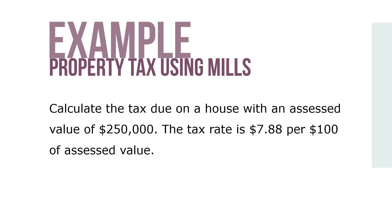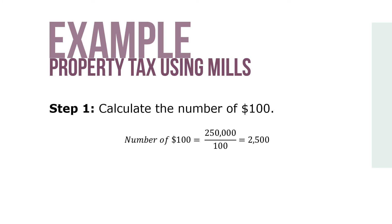Here's an example. Calculate the tax due on a house with an assessed value of $250,000. The tax rate is $7.88 per $100 of assessed value. Step 1: Calculate the number of $100, which is equal to $250,000 divided by $100, which is $2,500.